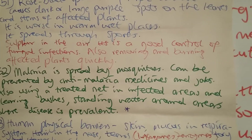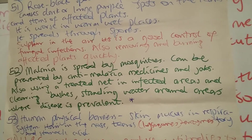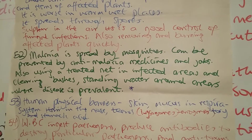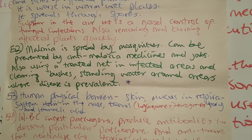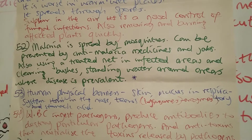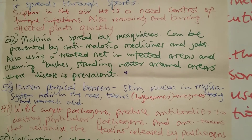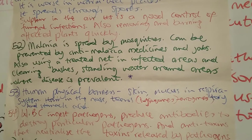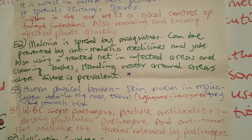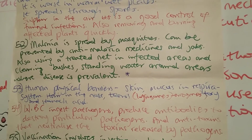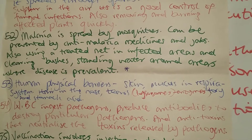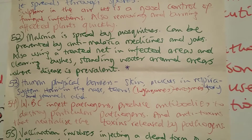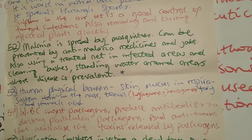Question 52 is about how malaria is spread. Malaria is spread by mosquitoes. Mosquitoes are not actually what causes malaria — they are vectors that carry the plasmodium, which actually causes malaria. Malaria can be prevented by taking anti-malaria medicines and jabs. If you're travelling to a warm, mosquito-infested place, you want those injections before you leave. Also by using treated nets in doors and windows, and by clearing out bushes and removing any standing water in containers — this reduces the breeding ground for mosquitoes and stops transmission of the malaria plasmodium.